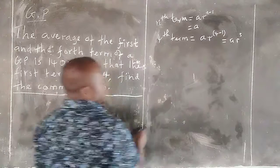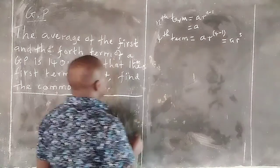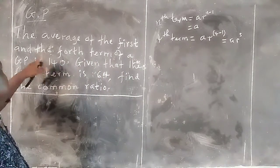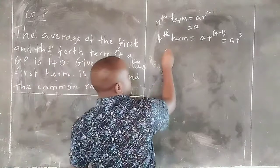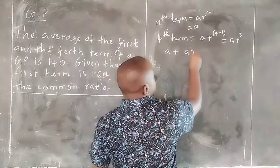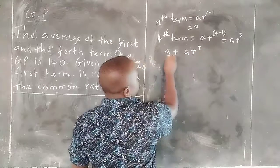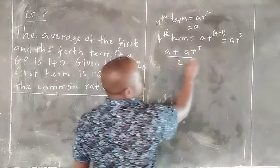Now we are being told that the average of the first and the fourth terms of a GP is 140. That means when we take the first term and we add the fourth term, then we divide them by 2, we get 140.